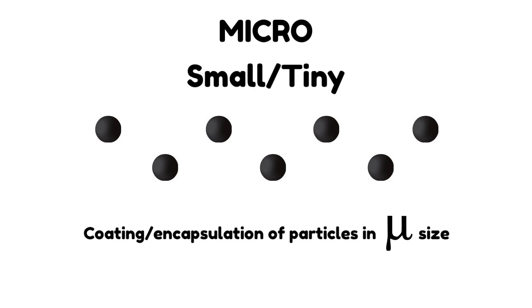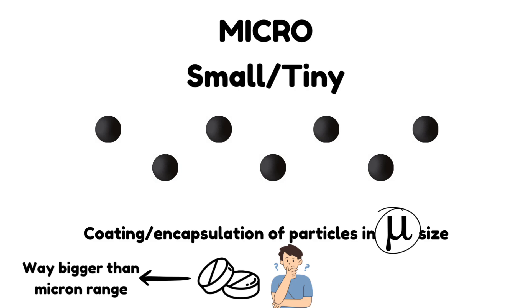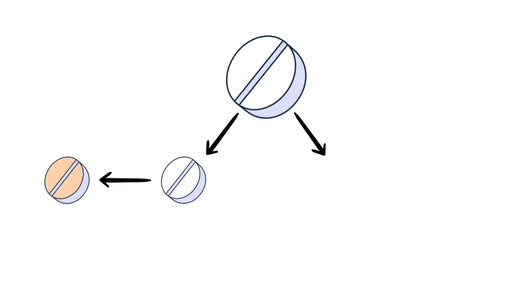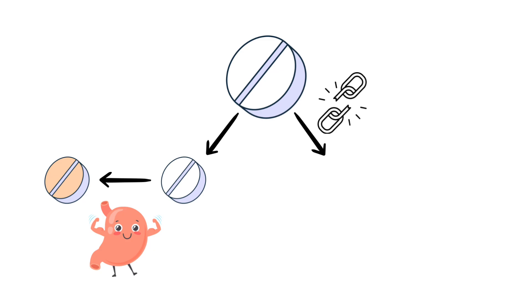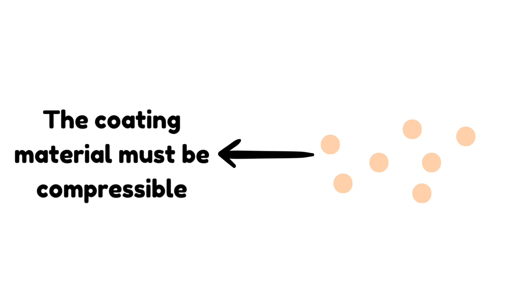One common misconception is that people get the idea that if something in the micron range is being coated, then this process won't be applicable to the tablets we use so often, because these tablets are not in the micron range. To clarify this, consider a tablet that you want to coat. There are two ways to do this. The simpler way is to coat the exterior of the tablet, which is precisely what is done in enteric coating. But a tougher way is to break the tablet down into particles of micron size, coat these micron-sized particles individually, and then compress them back into a tablet — assuming the coating material is compressible.